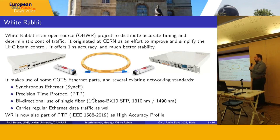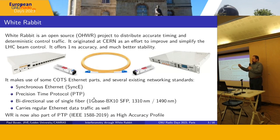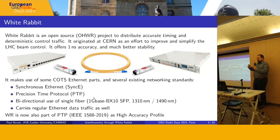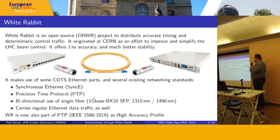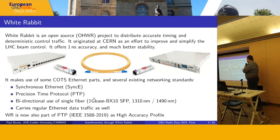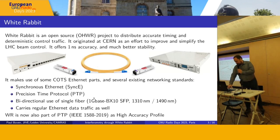White Rabbit builds on many existing networking standards. First, it uses synchronous Ethernet, where you use the actual bit carrier of the Ethernet, synchronize to that, and return that same bit carrier. It uses precision time protocol to measure the round-trip time and offsets between the clocks. It uses bidirectional fiber with two different wavelengths to use just a single fiber. Because it's based on Ethernet, you can also use it to carry data — you still have a one-gigabit Ethernet link. White Rabbit is now part of the IEEE PTP standard as the high-accuracy protocol in the latest revision.